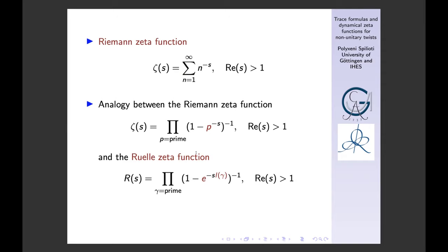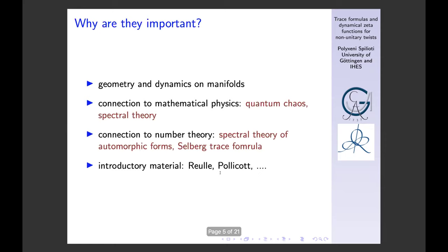The precise analogy between the Euler product formula for the Riemann zeta function and the Ruelle zeta function is this: we have prime numbers on one side, and the exponential of the length of the prime closed geodesics on the other. This is the precise analogy.